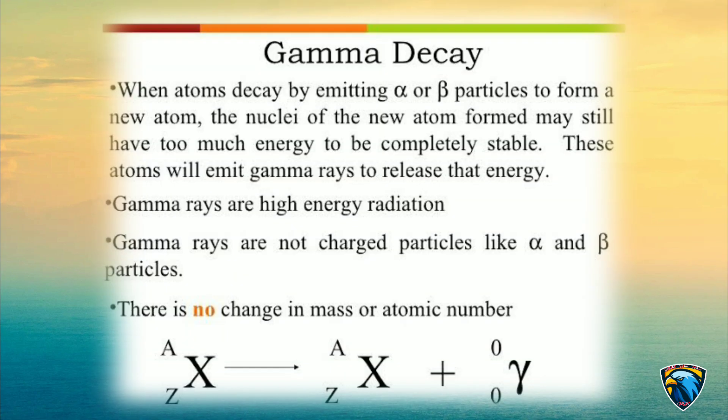Gamma Decay: When atoms decay by emitting alpha or beta particles to form a new atom, the nuclei of the new atoms formed may still have too much energy to be completely stable. These atoms will emit gamma rays to release that energy. Gamma rays are high-energy radiation and are not charged particles like alpha and beta particles.